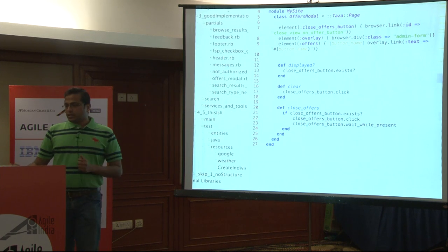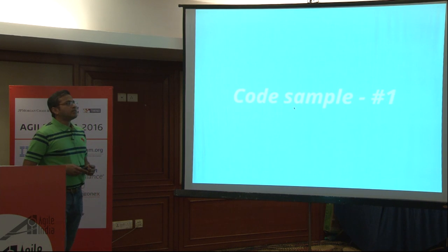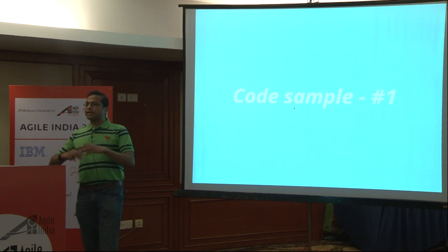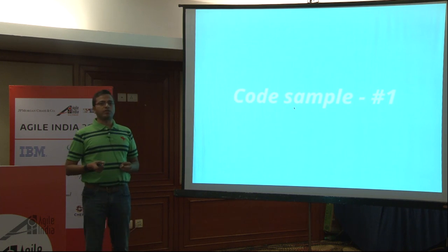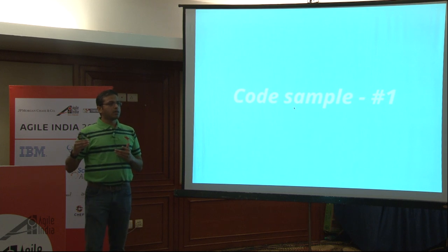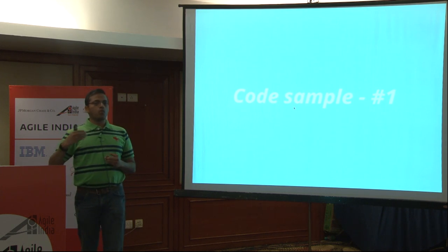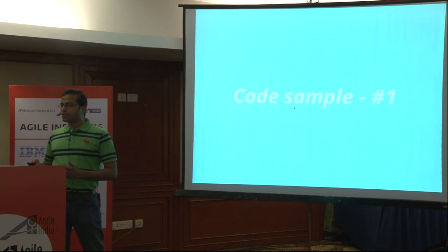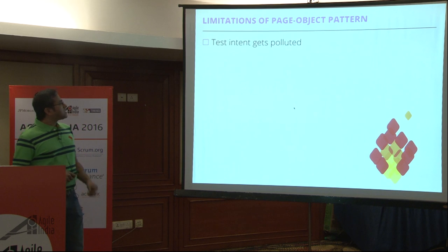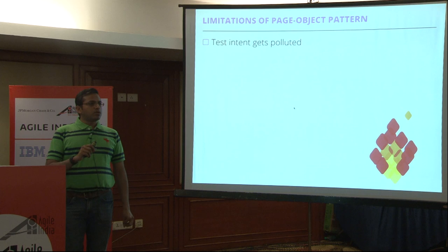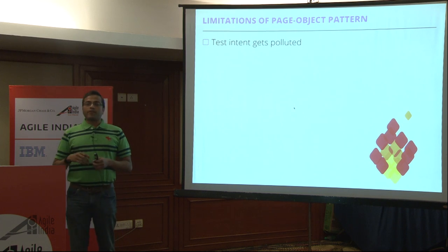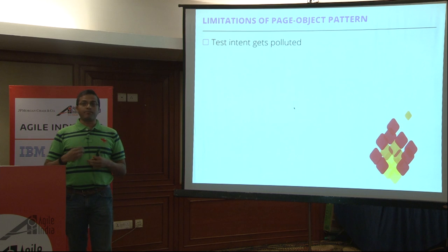Why did we need to see these two examples — the huge class file and the partial snippets? This is an evolution that happens in a test automation framework. You're using a pattern, but you eventually realize it only solves the problem up to a certain level and something is missing. To identify the root cause, let's look at the limitations of the page object pattern. The first thing is the test intent starts getting polluted.